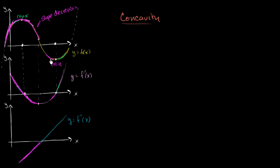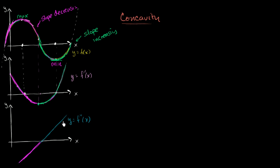Now, transitioning to the upward-opening U part of the curve: the derivative starts reasonably negative, but then becomes less and less negative, then reaches zero, then becomes more and more positive. So over this entire interval, the slope — or the derivative — is increasing. You can see this in the second derivative: if the derivative is increasing, then the derivative of the derivative must be positive. And indeed, the second derivative is positive over this interval.